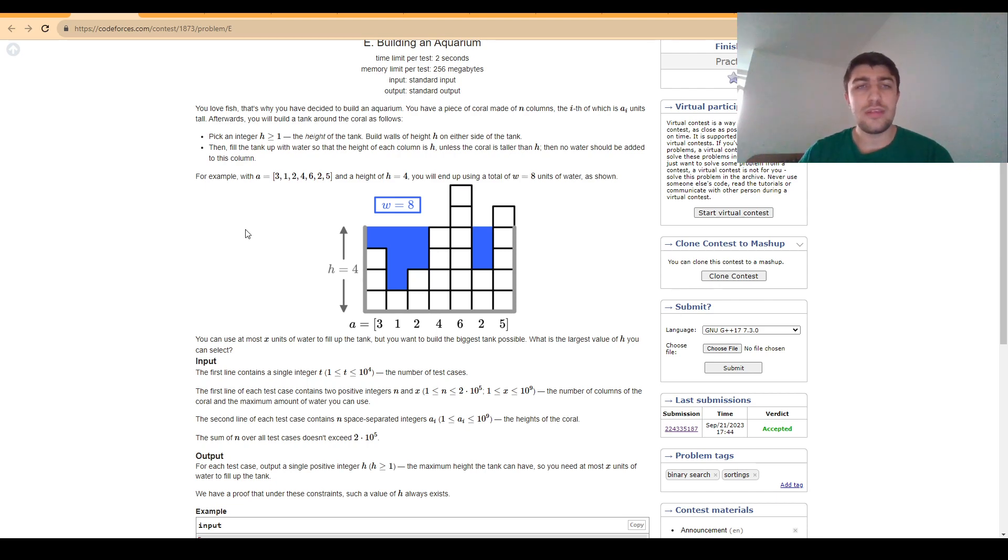Our goal is to fill the positions in the array so that the height of the tank is as high as possible, and the height of the tank is defined as the minimum value up to which we can fill everything.